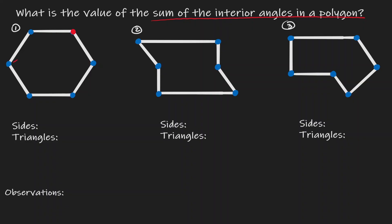I can start connecting this vertex to all the other vertices within this polygon. By doing so, I have created one triangle. I can repeat this process, connecting that same vertex to the following ones. So now we have two triangles, then a third, and a fourth triangle. So this figure that had 6 different sides, we were able to break it down into 4 different triangles.